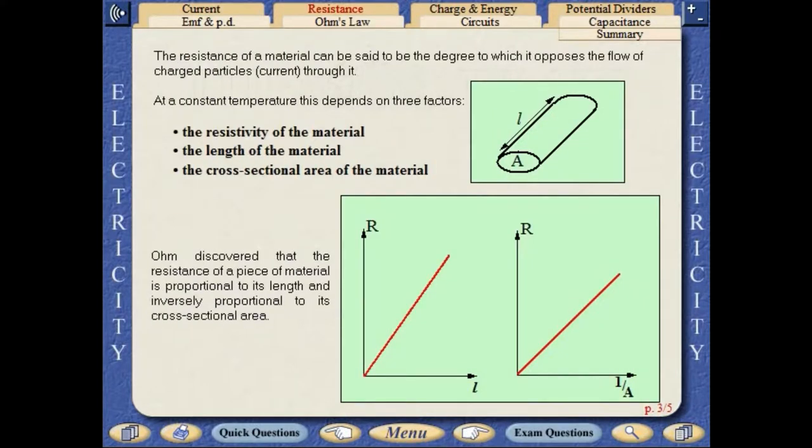The resistance of a material can be said to be the degree to which it opposes the flow of charged particles through it. At a constant temperature, this depends on three factors: the resistivity of the material, the length of the material and the cross-sectional area of the material.